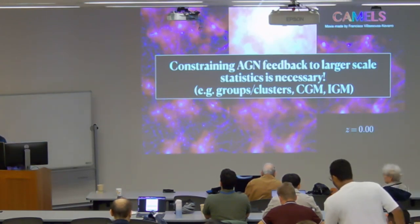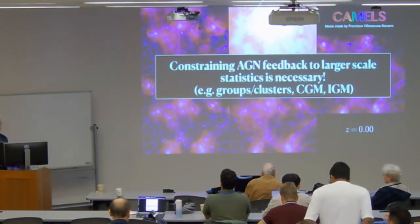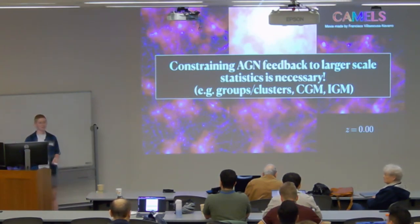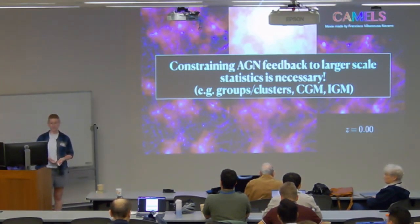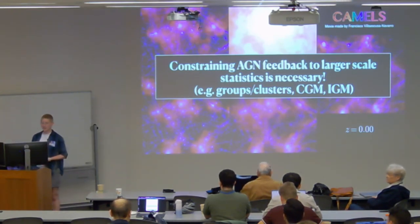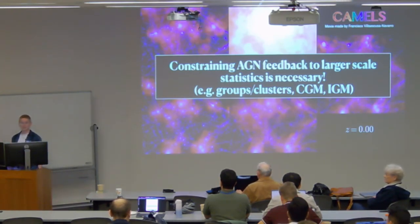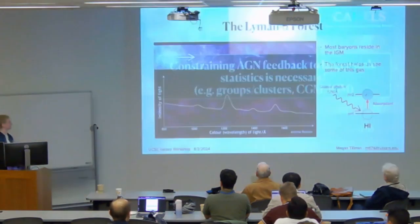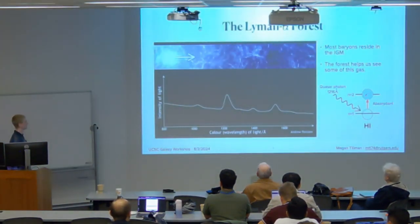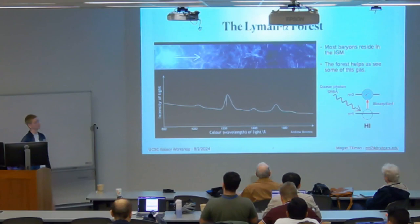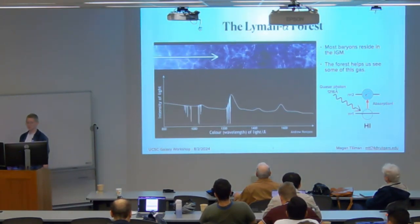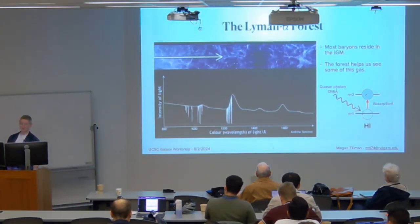That's why many people have recently been trying to constrain AGN feedback with larger-scale statistics. More often now you have people using groups and clusters as constraints, people looking at AGN effects on the CGM, and even out to the IGM — and that's where I come in. I'm looking at the Lyman alpha forest.